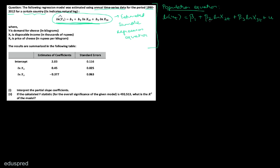Because beta 1, beta 2, beta 3 are the population parameters, B1, B2, and B3 are the estimators of these parameters. So B1 is the estimator of beta 1, B2 is the estimator of beta 2, and B3 is the estimator of beta 3. This is the first thing you should be clear about — the difference between sample and population equations.